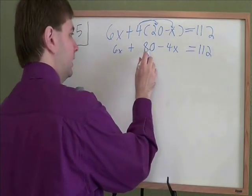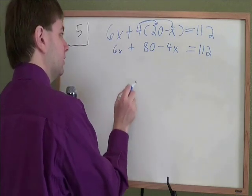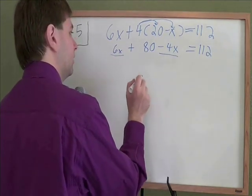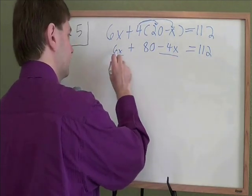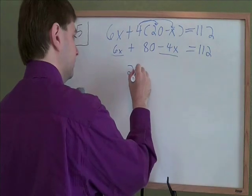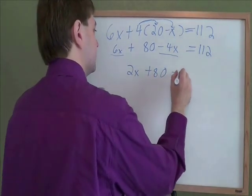Now we have 6x plus 80 minus 4x all on the left side. So we can combine like terms. We've got these 6x's and those minus 4x's. They're both on the left side, so we'll just go straight across. What is 6 minus 4? That's 2. We've got 2x, and the plus 80 stays the same, so does the 112.